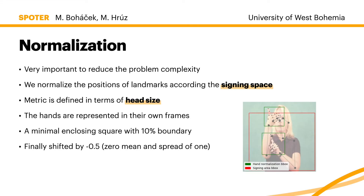Now let's move on to our normalization technique. We utilize findings from sign language linguistics concerning the use of space, and project the body landmarks onto the signing space. The signing space is defined with respect to the head metric of each signer, and is thus personalized — it helps overcome differences in body structure and camera setting. The hands are then represented in their own frames and normalized there.